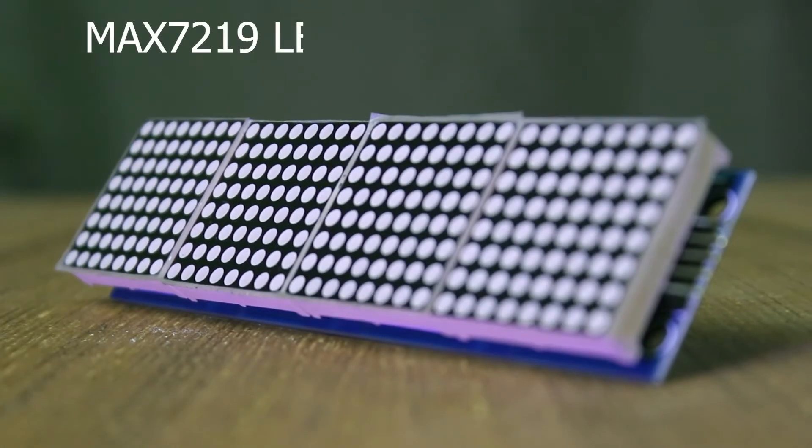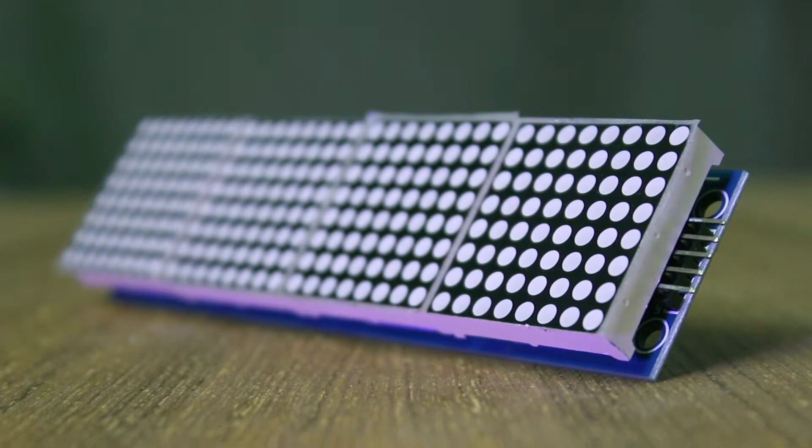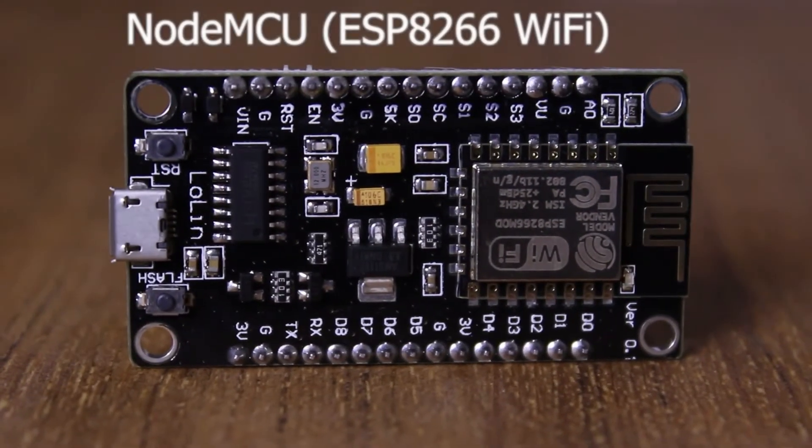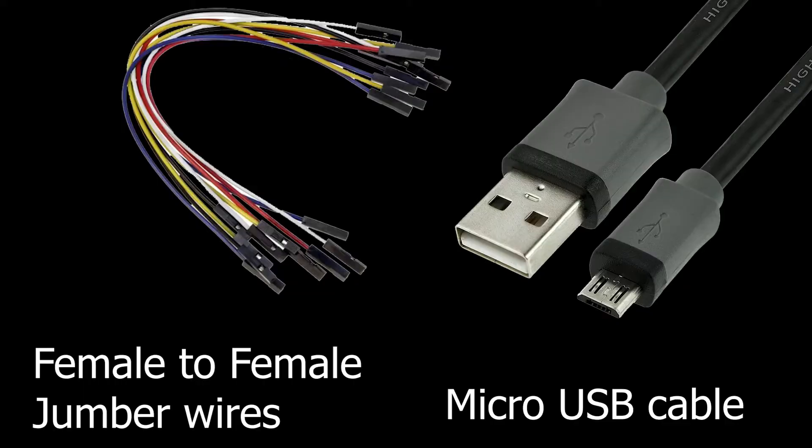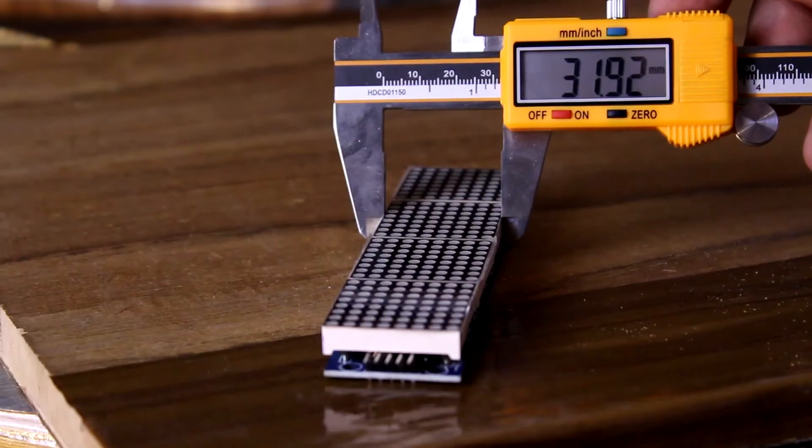The project is quite simple, you don't need to be an expert in coding because all the codes will be linked in the description. The things you need for this project are Max 7219 LED matrix display, NodeMCU ESP8266 with Wi-Fi module, female to female jumper wires, micro USB cable, and some wood. I will leave the links in the description.